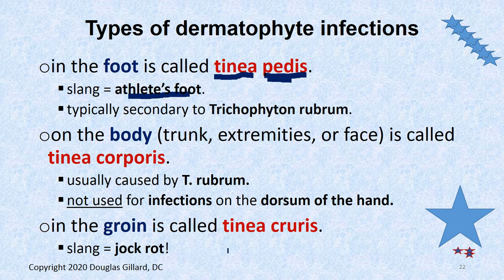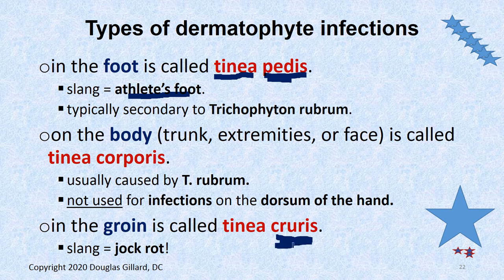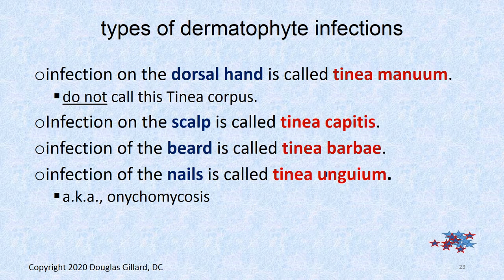How about the groin region, where the thigh meets the trunk or the inguinal ligament is? That's jock itch — it's a fungus that eats keratin, and cruris is the term for the groin region, so it's tinea cruris. Tinea pedis, tinea corporis, tinea cruris — make sure you know those. The magic three: if there are three on a slide, that's prime pickings for a test question.